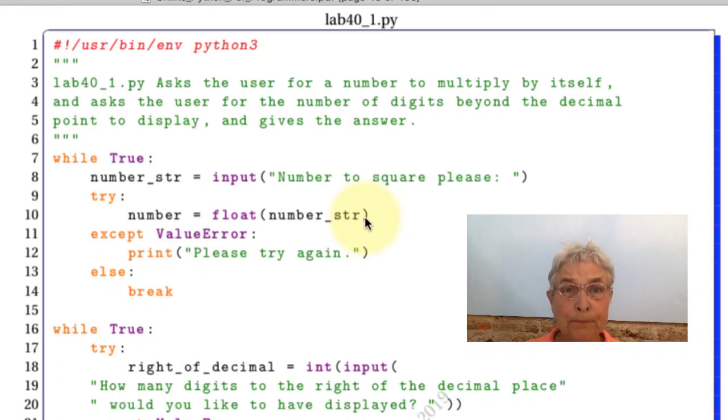I hope that was fun. So we have now lab 40 underscore 1 and we see right away we have two while loops. It looks so similar I start to wish we had functions. I think that's the next lab.